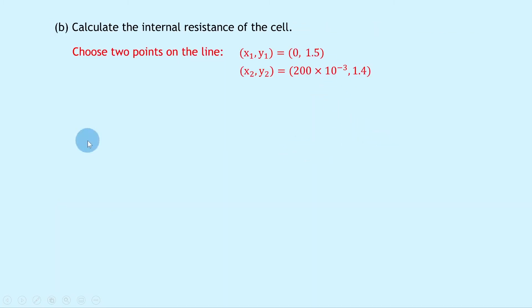So once we've got our coordinates for the two points, we can say the negative of the internal resistance, minus r, is equal to the gradient m, which is equal to y2 minus y1 over x2 minus x1. And then we plug in the numbers to get 1.4 minus 1.5 divided by 200 times 10 to the minus 3 minus 0, and if you put that into your calculator you should get a value of minus 0.5.